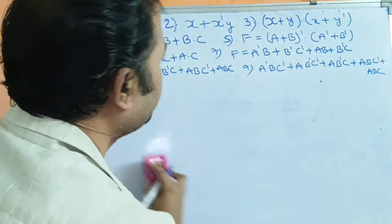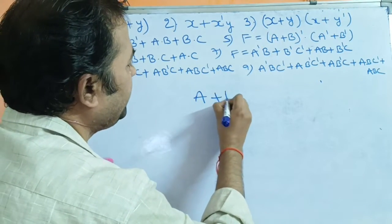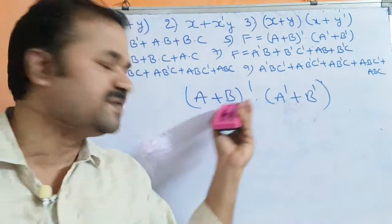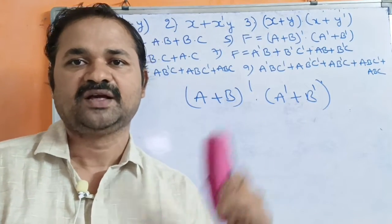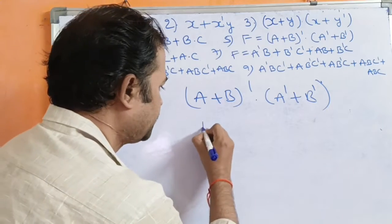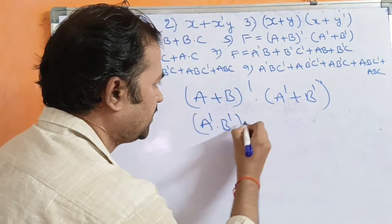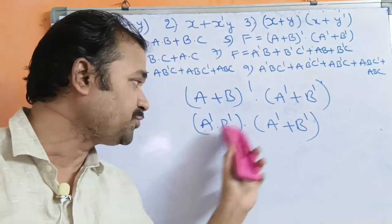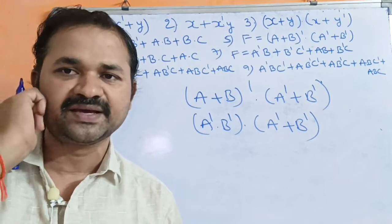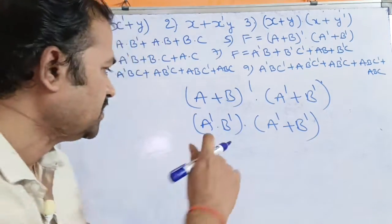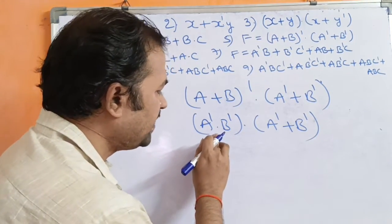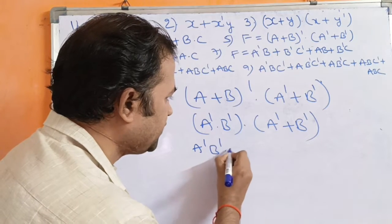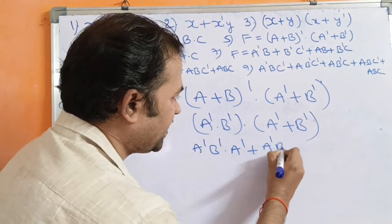Now the fifth example: (A+B)̄·(Ā+B̄). This is De Morgan's law. Directly applying the formula, (A+B)̄ = Ā·B̄. So we have Ā·B̄·(Ā+B̄). By distributive law, multiply Ā·B̄ with both terms: ĀB̄·Ā + ĀB̄·B̄.